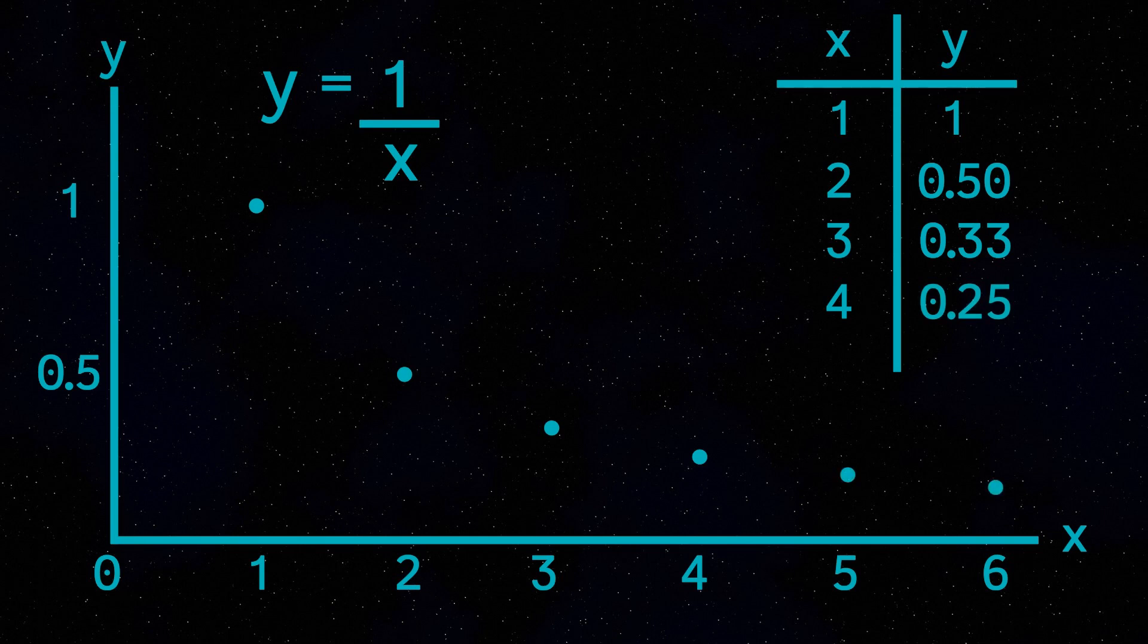If we then plot this curve, as the values of x get bigger and bigger and bigger, the values of y get smaller and smaller and smaller, but importantly, never ever reach zero. The value of y will become minuscule, but it will never ever become zero.